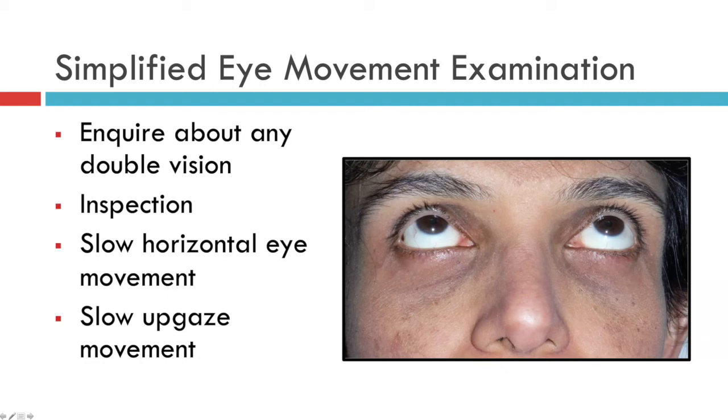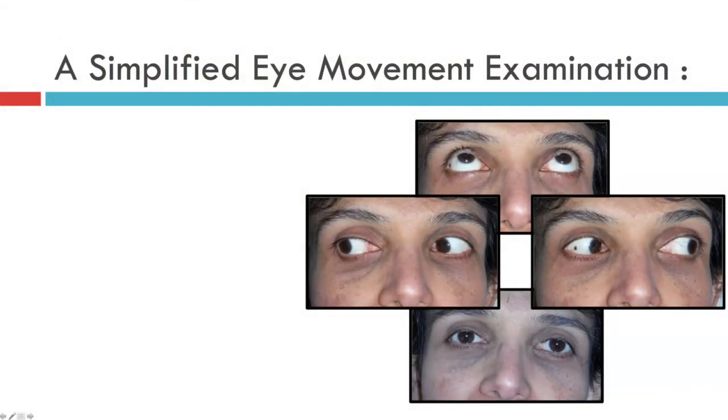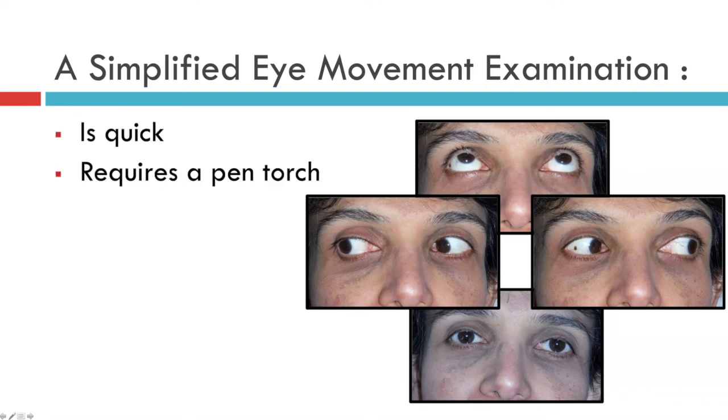Let's look at the entire sequence for completeness. The patient follows your pen torch into far left gaze, ruling out nystagmus and restrictions of eye movements, before returning to the primary position and then to the right — at all times looking at the corneal reflection of your pen torch. Then the patient looks into far up-gaze to look for signs of convergence retraction nystagmus, and after sustained up-gaze to see if there is a ptosis suggestive of myasthenia gravis.